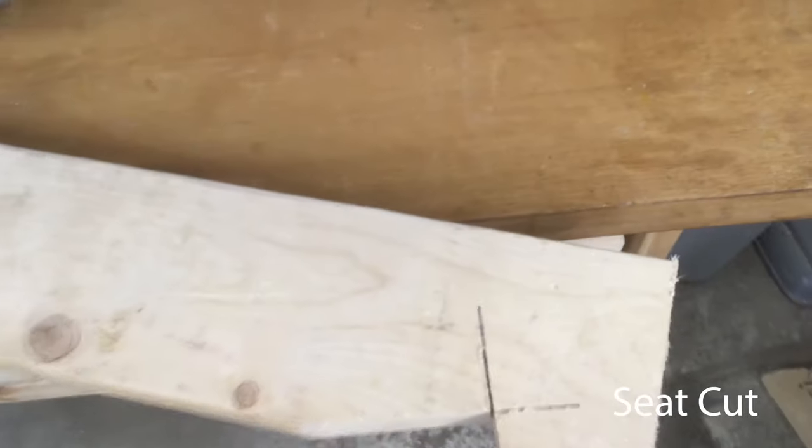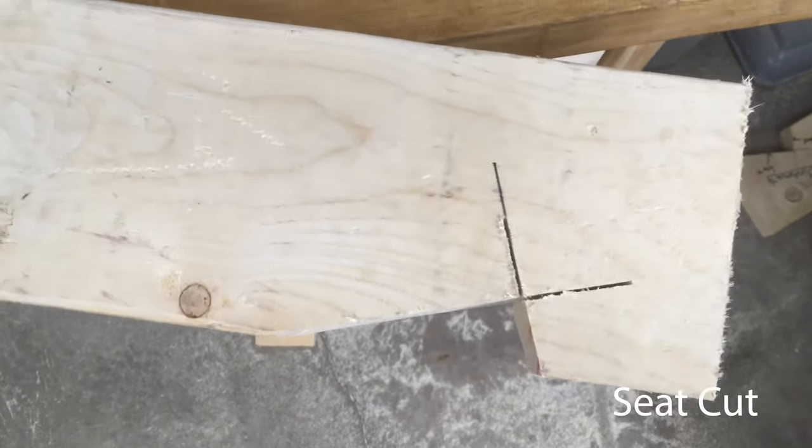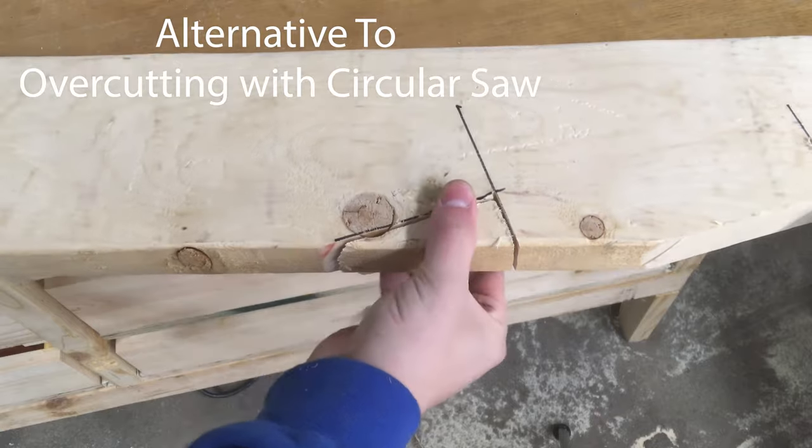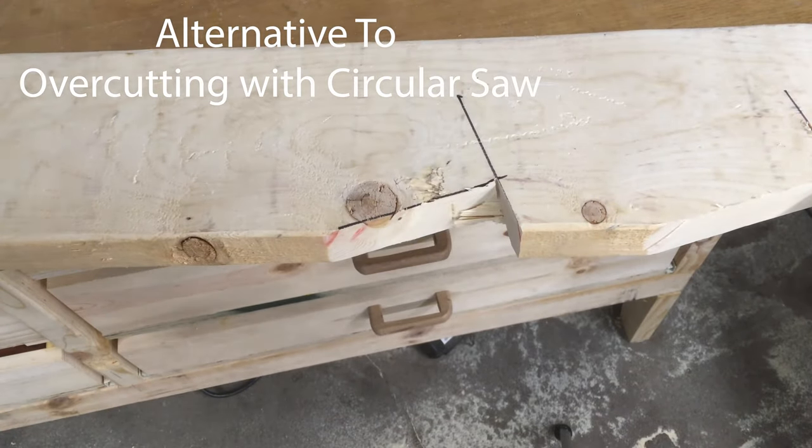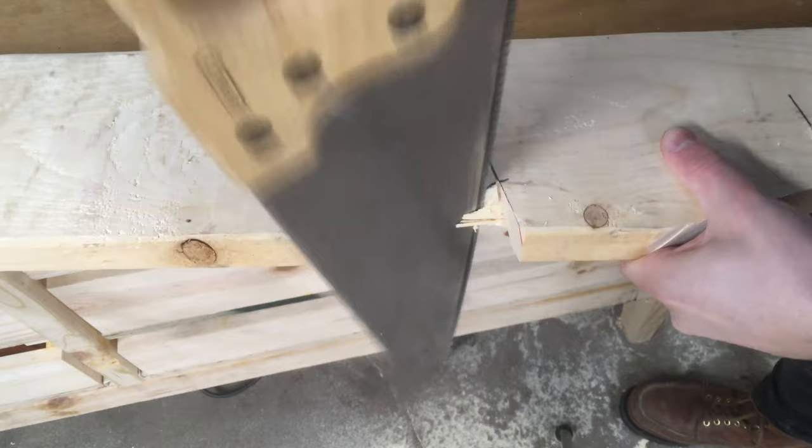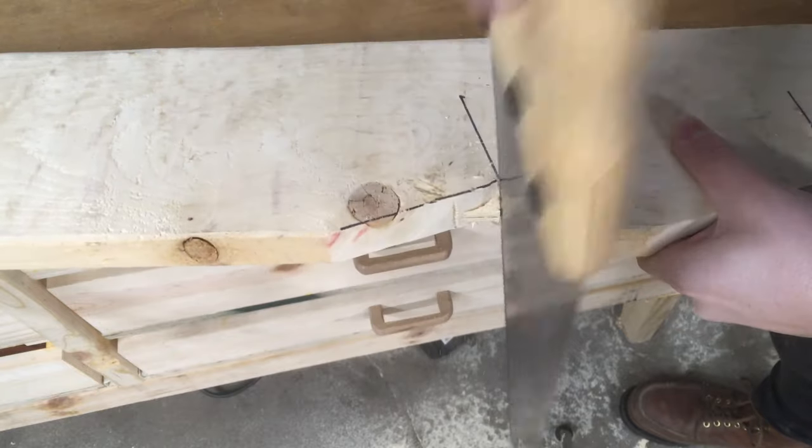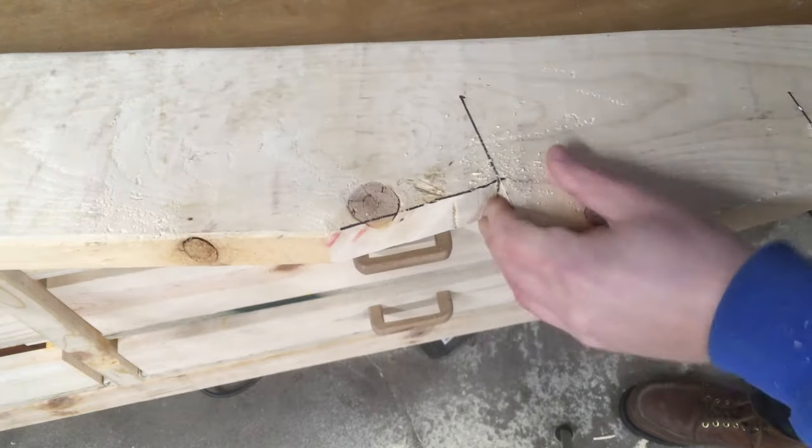If you cut the notch completely with the circular saw, you'll end up with overcut into the remaining rafter. All the pros seem to do this, but if you don't want to have extra material cut away unnecessarily, you can finish the cut with a handsaw or a jigsaw, or cut the whole thing that way.